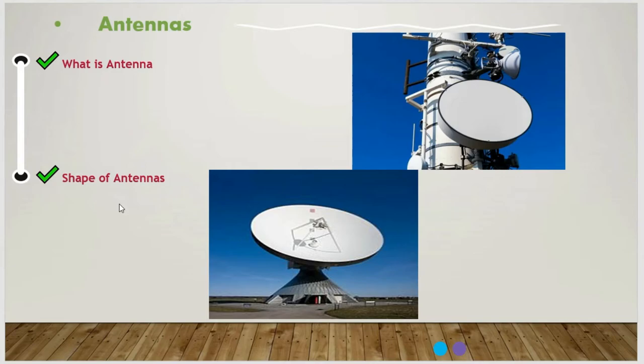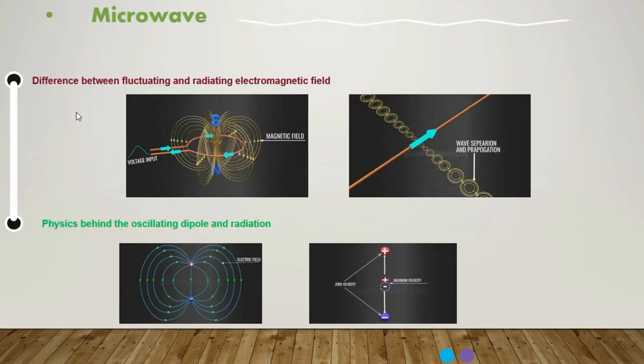Difference between fluctuating and radiating electromagnetic field. We have an electrical signal, so how do we convert it to an electromagnetic wave? You might have a simple answer in your mind - to use a closed conductor. With the help of the principle of electromagnetic induction, you will be able to produce a fluctuating magnetic field and an electrical field around it, as shown here in this graph.